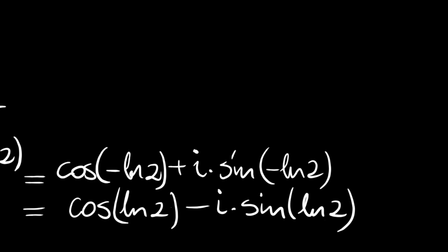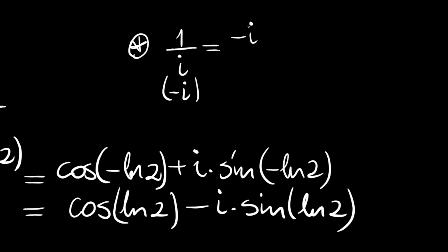Now, one over i is equal to negative i since if we multiply 1/i by negative i over negative i, we get negative i divided by negative i squared. Since i squared is defined to be negative one, we have negative i. Thank you for watching and see you in the next videos.